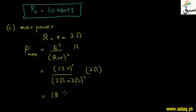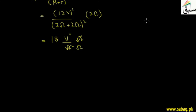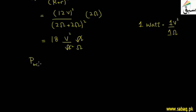After calculating, the value came out to 18. Balancing units: V squared divided by ohm squared times ohm gives V squared divided by ohm, which converts to watts — confirming no calculation mistakes. Therefore the maximum power Pmax equals 18 watts.